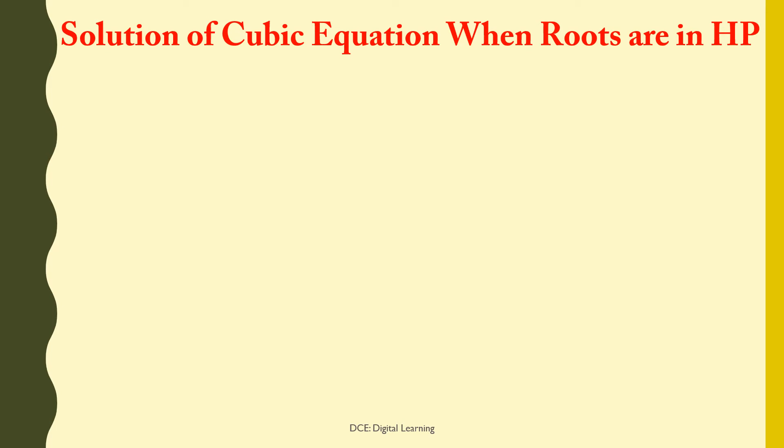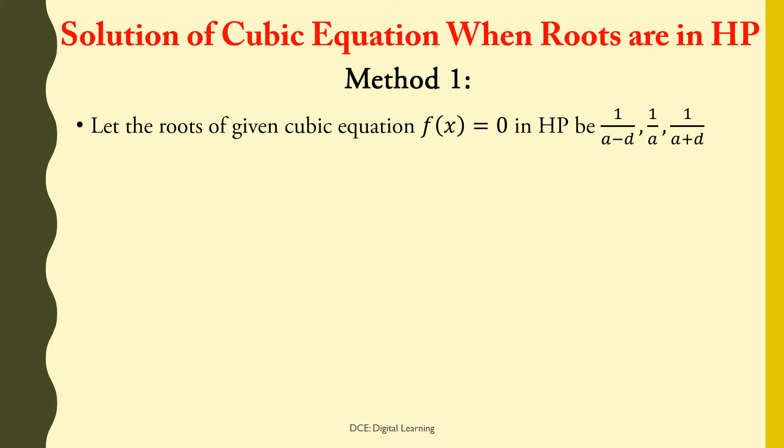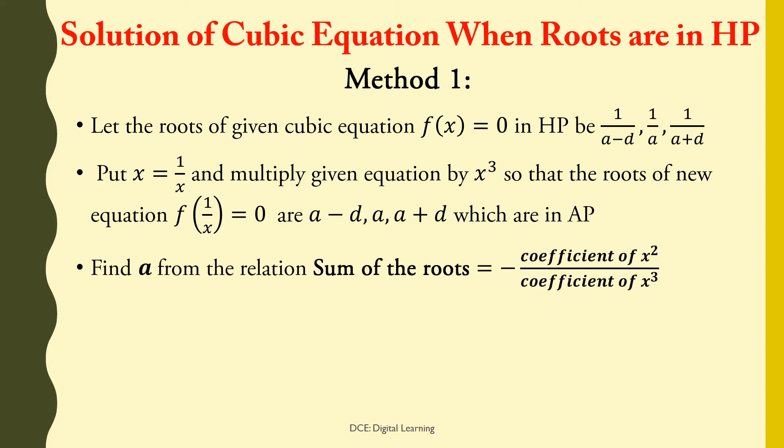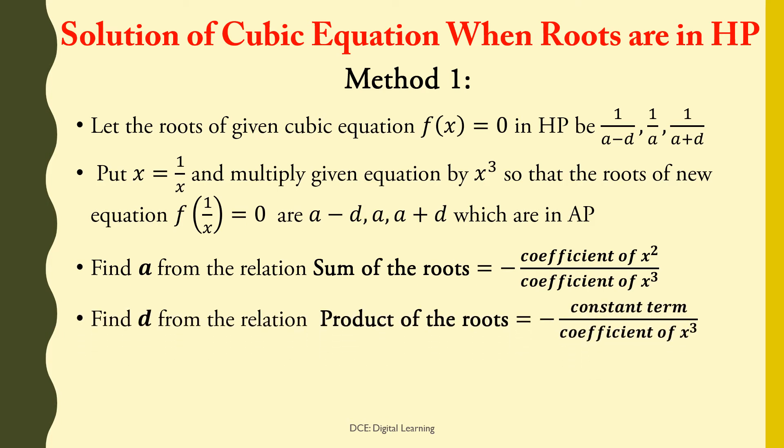Solution of cubic equation when roots are in harmonic progression — Method 1. Let the roots of the given cubic equation f(x) = 0 in harmonic progression be 1/(a−d), 1/a, 1/(a+d). Put x = 1/x and multiply the given equation by x³ so that the roots of the new equation f(1/x) = 0 are a−d, a, a+d, which are in arithmetic progression. Find a from the relation: sum of roots = −(coefficient of x²) / (coefficient of x³). Then find d from the relation: product of roots = −(constant term) / (coefficient of x³). Hence, the required roots are 1/(a−d), 1/a, 1/(a+d).